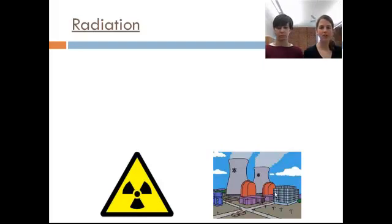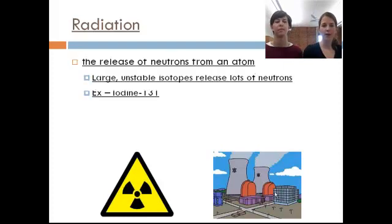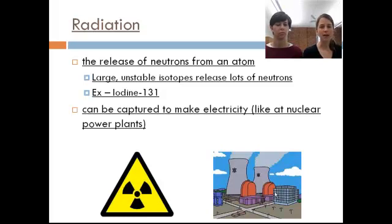So I don't know how much you guys already know about radiation. I'm sure you've heard this word before. But in science, when we talk about radiation, what we mean is the release of neutrons from an atom. So some of these really big unstable isotopes are going to release lots of neutrons. For example, iodine 131. This is the isotope that people are so worried about in Japan. So this isotope is present at the nuclear reactors there, and it's releasing a lot of neutrons. And that can be really good because we can use it to make electricity. So nuclear power plants take the energy that's released when neutrons escape from an atom, and they use that to make electricity.